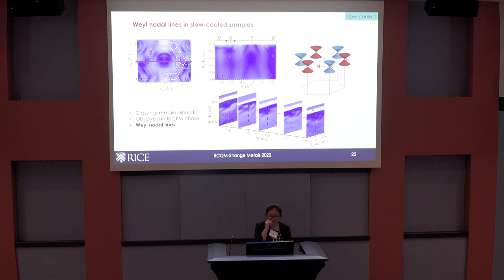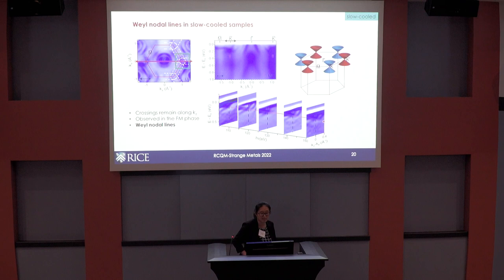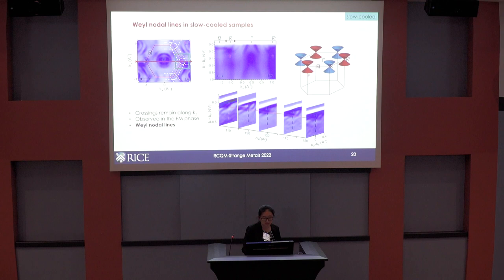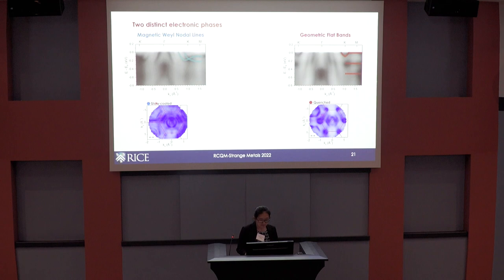Looking at the out-of-plane direction by probing kz through varying photon energy, we always see this crossing around the K point regardless of photon energy. This indicates that this crossing is really a nodal line running around the zone boundary of the Brillouin zone. All data shown today were measured deep in the ferromagnetic state around 15 Kelvin, meaning time-reversal symmetry is broken, so there can only be double degeneracy — these crossings must therefore be Weyl nodal lines around the zone boundary.